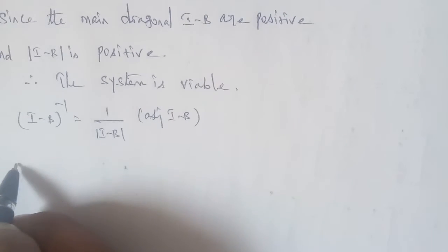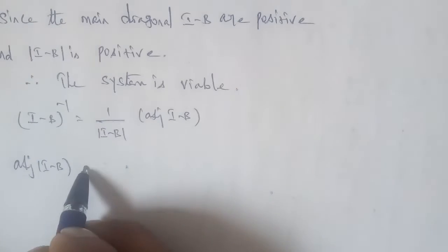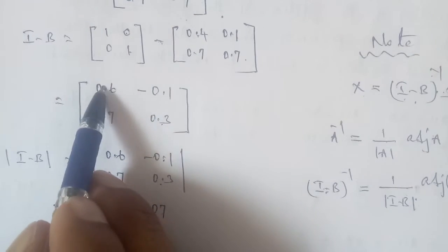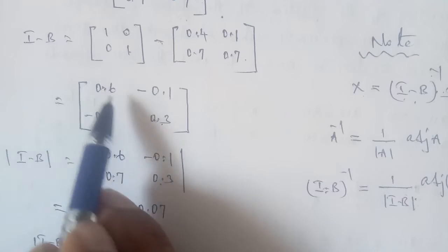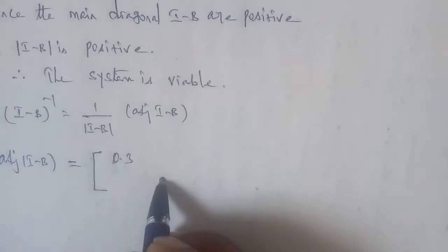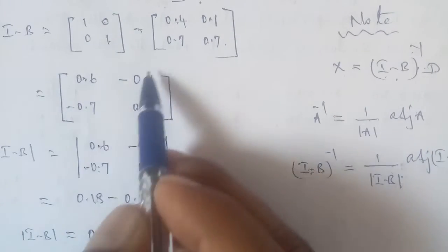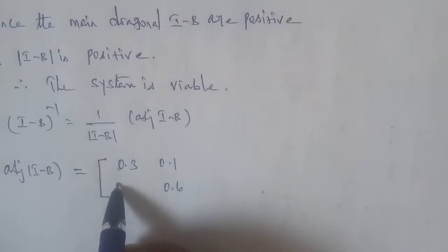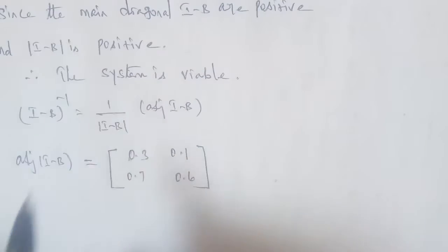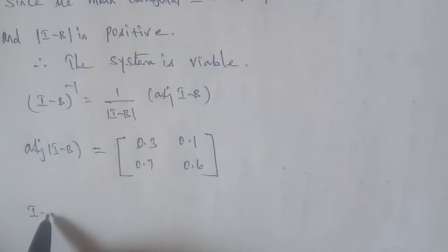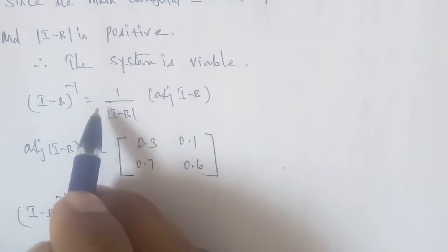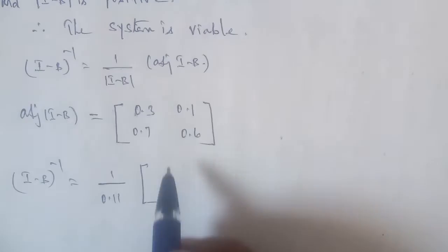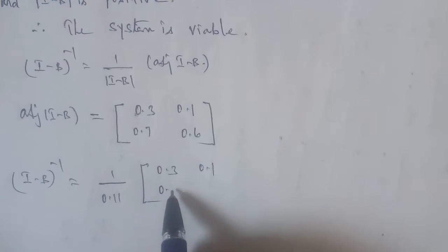The adjoint of I minus B is a 2×2 matrix. For a 2×2 matrix, the adjoint is found by interchanging the diagonal elements and changing the signs of the off-diagonal elements. So the adjoint of I minus B is: [0.3, 0.1; 0.7, 0.6].